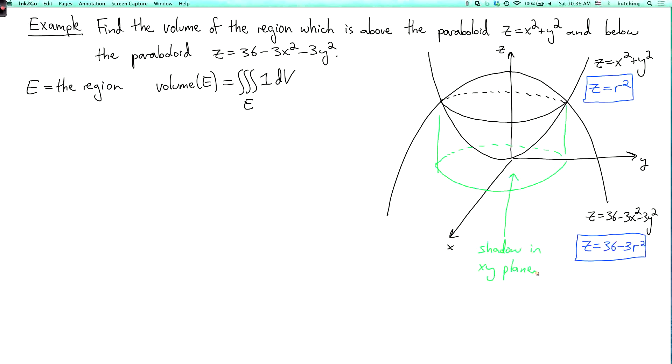So how can we figure out what the shadow is? Well, the boundary of the shadow is the curve where these two surfaces meet. The boundary of the shadow is the shadow of the curve where the two surfaces meet.